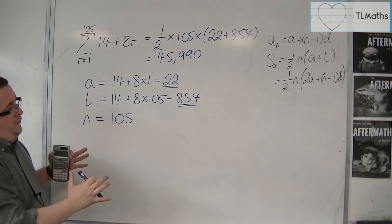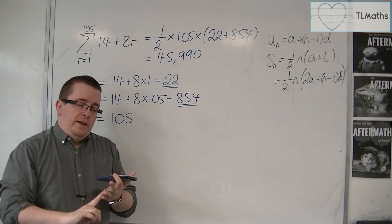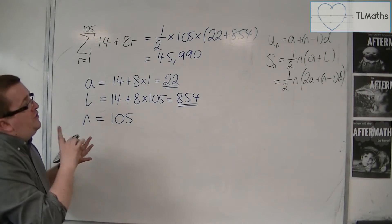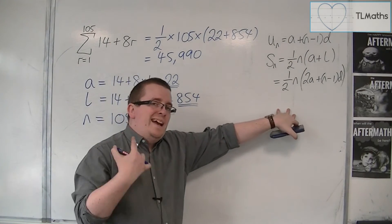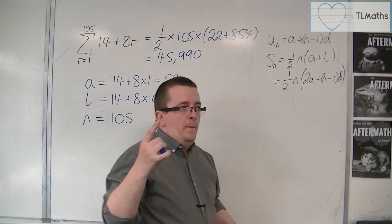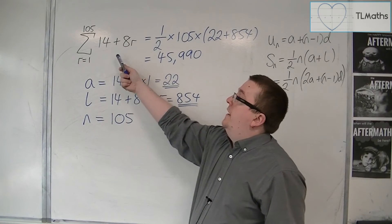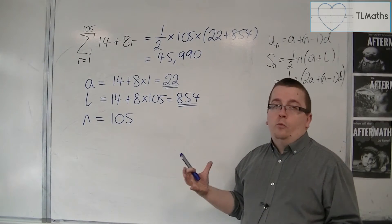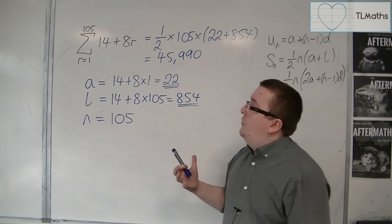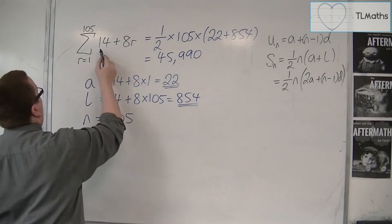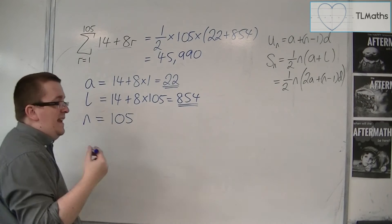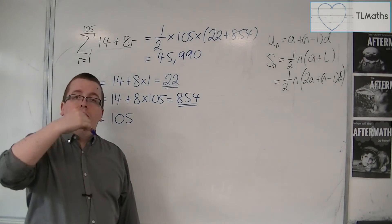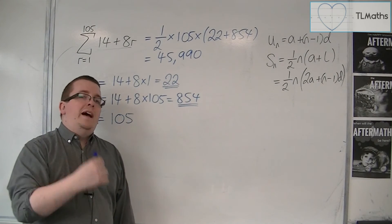In order to evaluate that sigma series using these formulas, it had to be an arithmetic series. I could write down an Nth term that would make this non-arithmetic, and so this process wouldn't have worked. It is because the Nth term — 14 plus 8R — is linear, because it is an arithmetic sequence's Nth term, that is why this worked.